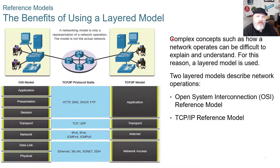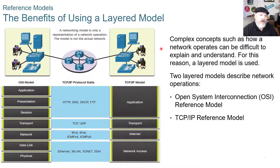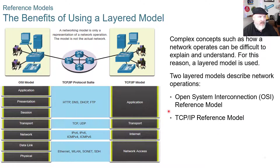The benefits of using a layered model is that complex concepts such as how a network operates can be difficult to explain and understand, so for this reason a layered model is used. Two layered models describe network operations: OSI and TCP/IP. The OSI has seven layers and the TCP/IP has four layers.